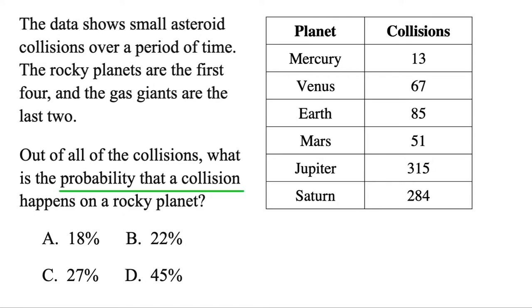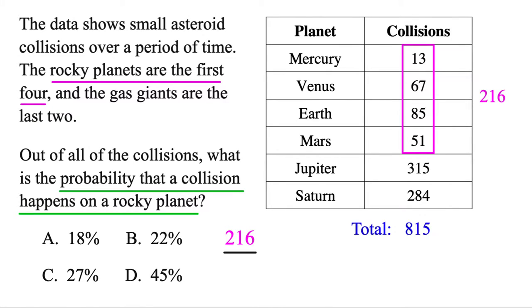For this problem, we're finding the probability that a collision happens on a rocky planet. But to do a probability, you're just going to set up a fraction. And then you want to count the things that you're interested in, all of the collisions that happened on rocky planets. And they mention those are just the first four planets listed here. And adding those, we get 216, so we'll put that up top. And then we want to divide it by the total. In this case, 815 collisions.